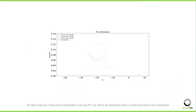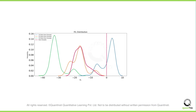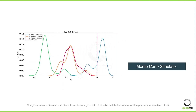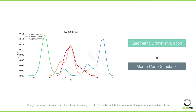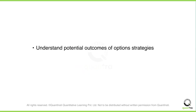In the end, you'll examine the P&L distribution of multiple option strategies. You'll learn how to write a Monte Carlo simulator based on geometric Brownian motion. This lets you examine the P&L distribution of straddles and strangles, helping you gain a better understanding of the potential outcomes of option strategies and assess the risk-reward trade-offs associated with these choices.